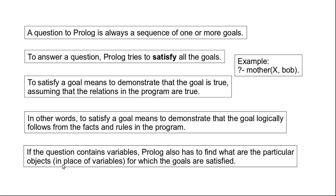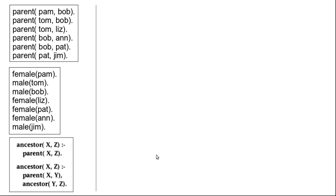If the query contains variables, Prolog also has to find what are the particular objects for which the goal is satisfied. Sometimes for multiple objects the goal may be satisfied, in which case Prolog will list all the values of that variable. So Prolog has to find what are the particular objects for which the goals are satisfied, if we have variables in the goal.